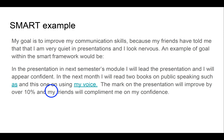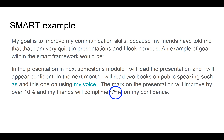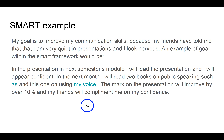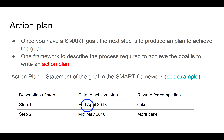For example, suppose you want to improve your communication skills because friends in the group have told you your presentations are a bit quiet and you look nervous. To convert that into a SMART goal, you could say: in the presentation for next semester's module, I will lead the presentations, I will appear confident, and next month I'll read two books on public speaking — one on how to give a TEDx talk and one from a voice coach on how to improve your voice. The mark on the presentation will improve by over ten percent, and my friends will compliment me on my confidence. This is timely because it targets next semester's module, and there are measurable ways to tell whether you've achieved it.